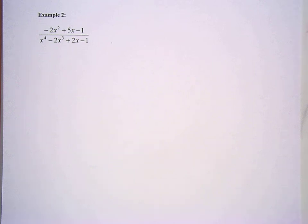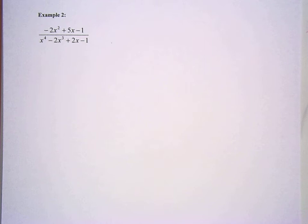So this is our last video for the week. We're going to go ahead and finish up with Case 4, Example 2. This is going to have a repeated quadratic factor. We don't know that right now just by looking at it because the denominator is x to the 4th minus 2x cubed plus 2x minus 1. Just an ugly problem.